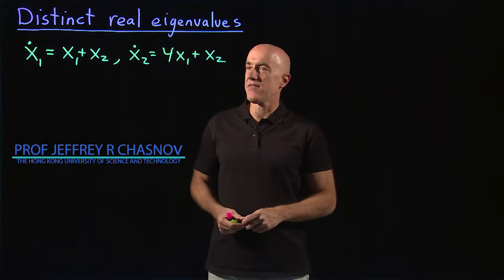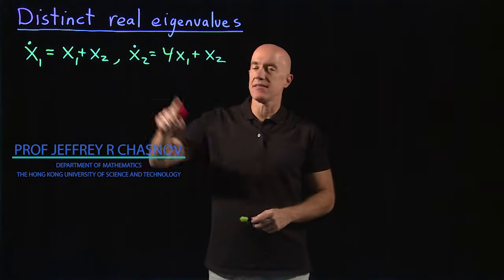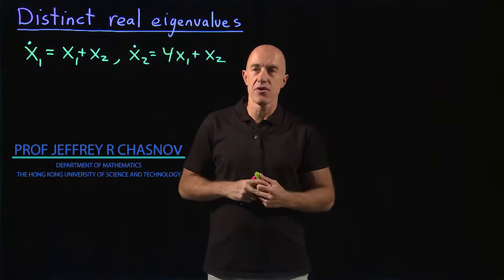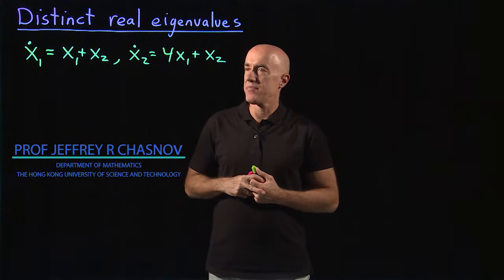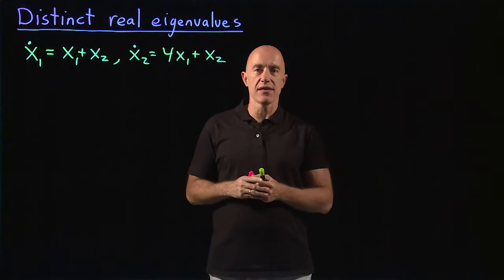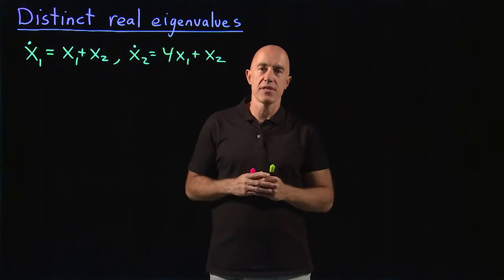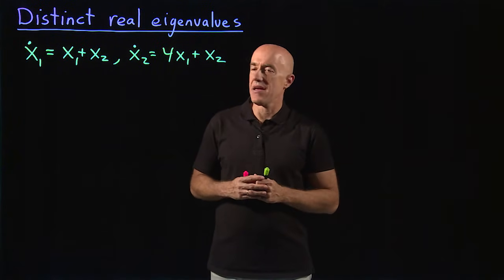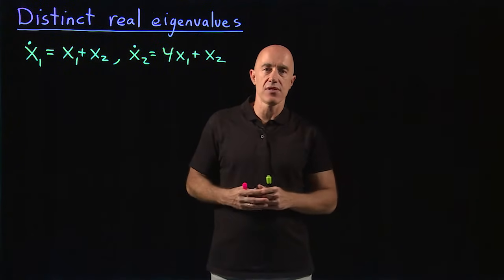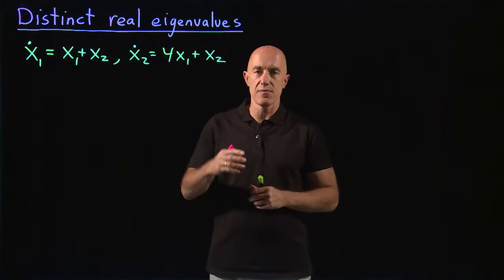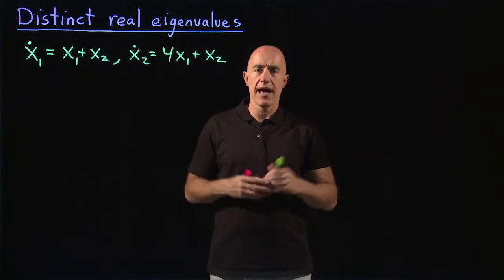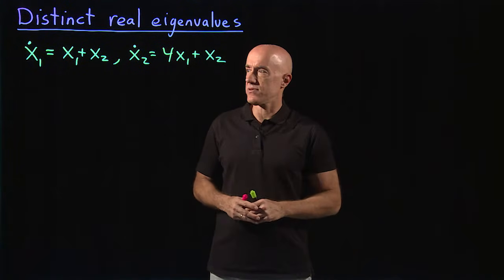In this video, let's solve one of these systems of linear equations. This particular case will turn out to have two real eigenvalues that are different. And then we'll see how to write down the general solution in terms of our eigenvalues and eigenvectors.